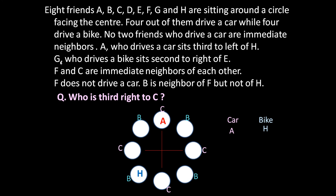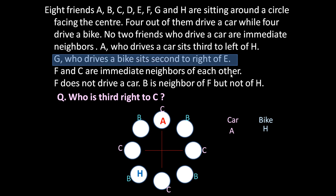Let us read the second statement: G, who drives a bike, sits second to right of E. We don't know where E or G are yet, but if G is driving a bike and G is second to the right of E, then E will also drive a bike — because one person sits between them. So G and E both drive a bike, though their exact positions are not yet clear.